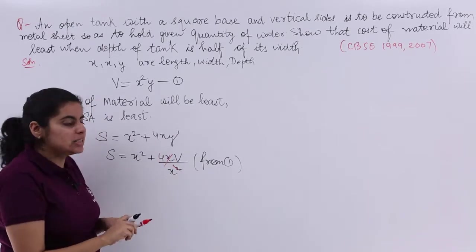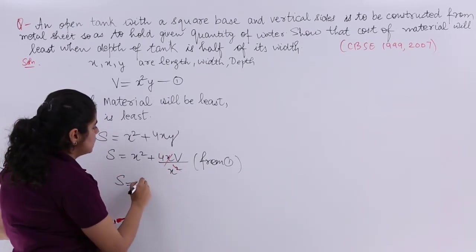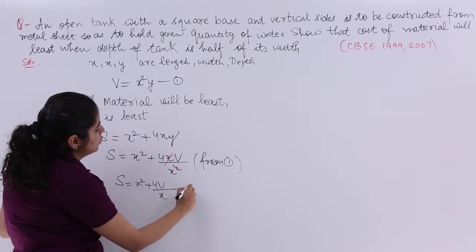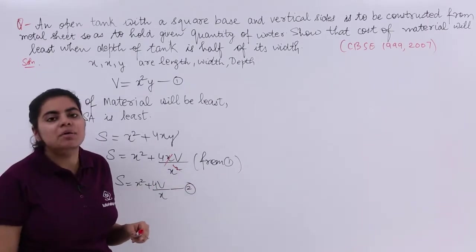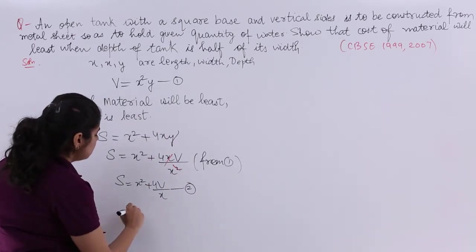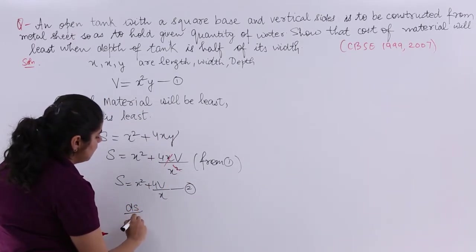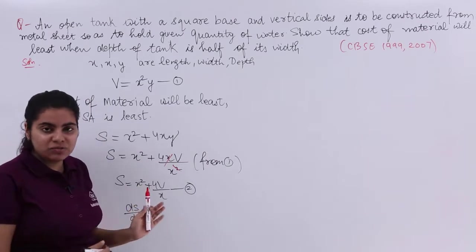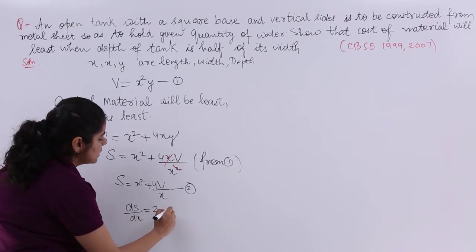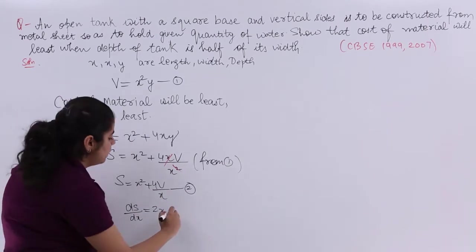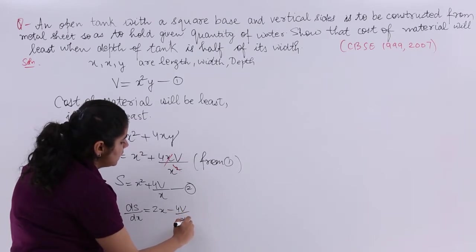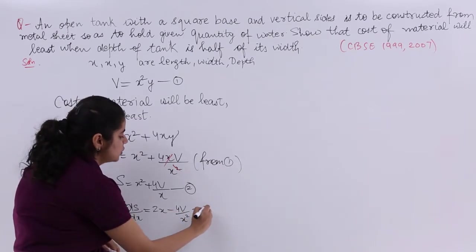So cancel whatever cancels. So it gives me S = x² + 4V/x. That is your equation number 3.